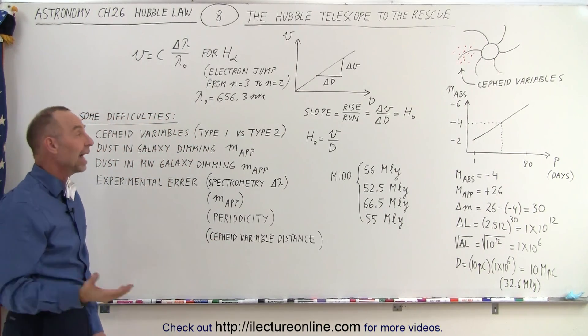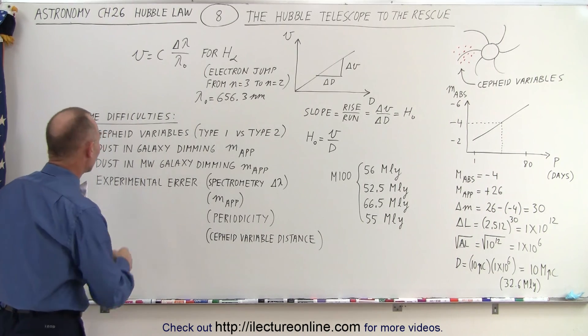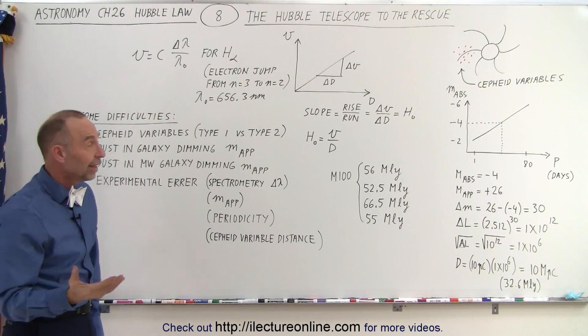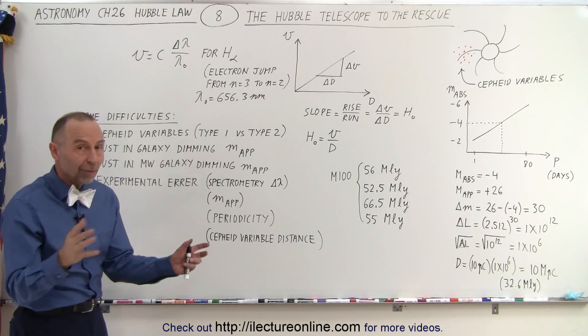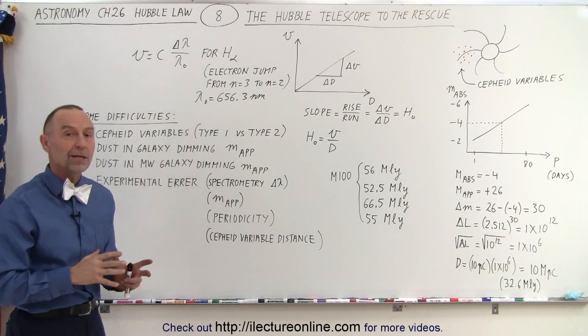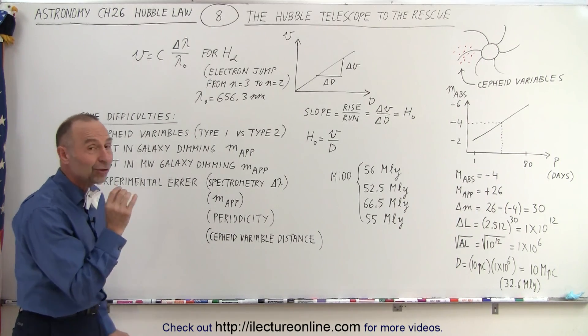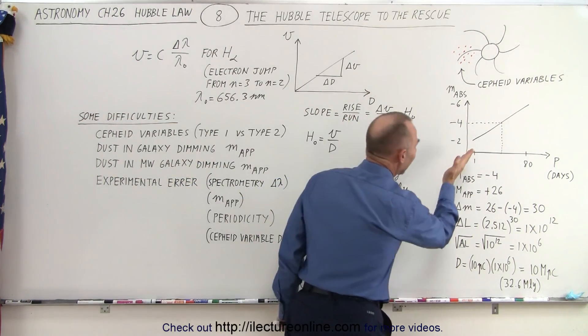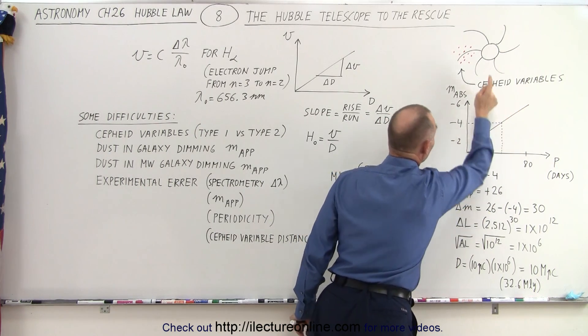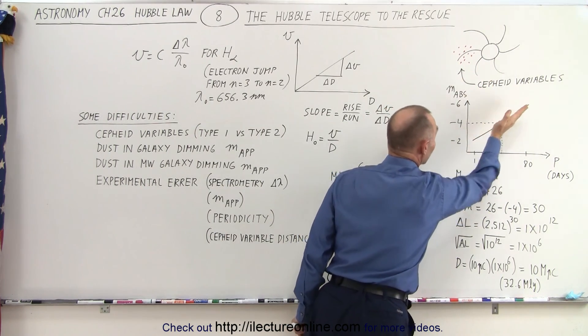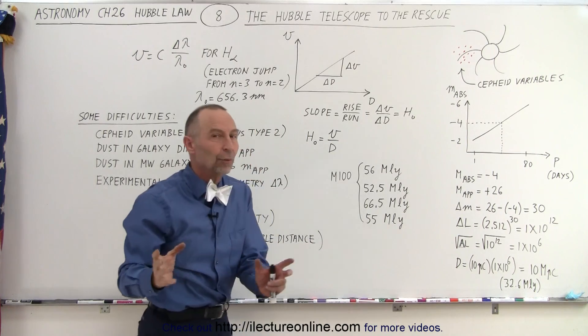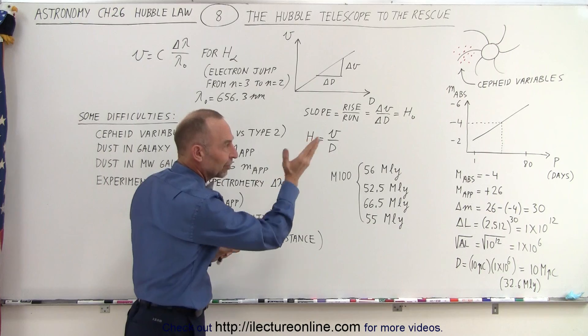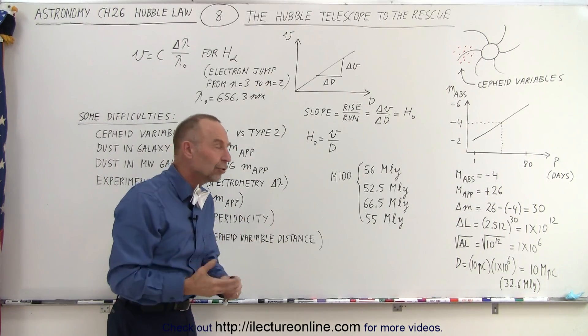First of all, not all Cepheid variables are alike. We have Type 1 and Type 2 Cepheid variables and sometimes we have kind of a mix in between. So you're not always sure exactly what type of Cepheid variable you're looking at and you're not quite sure exactly for every one of the Cepheid variables that the curve that you're assuming is the correct curve. There's going to be some differences between what's actually happening with Cepheid variables and the curve or the line that you're assuming.